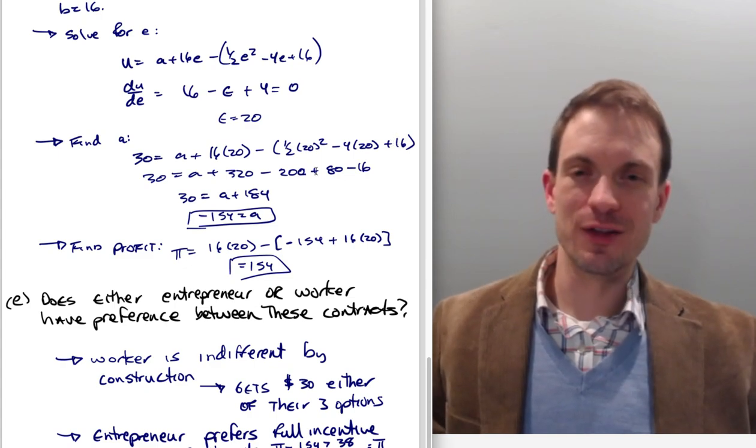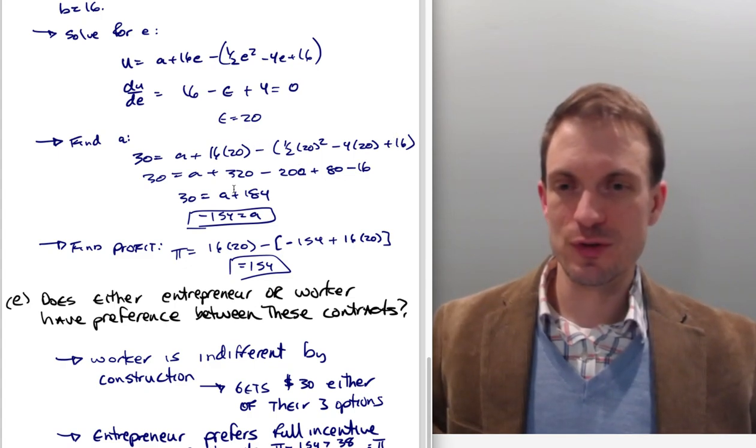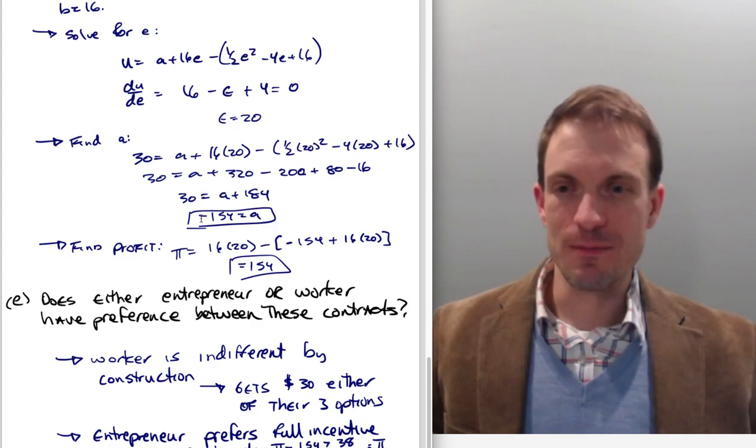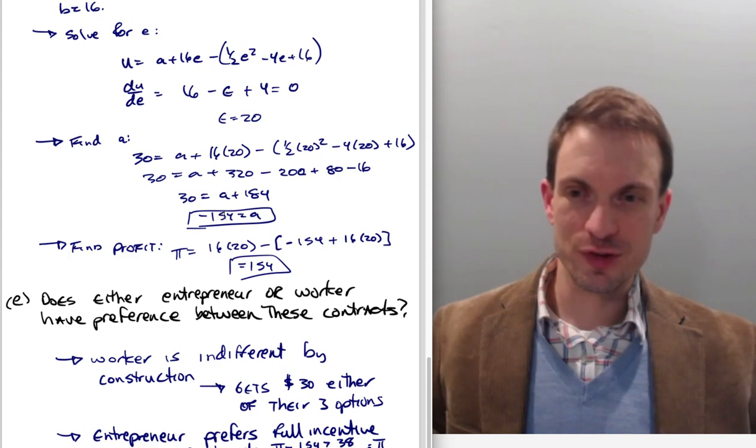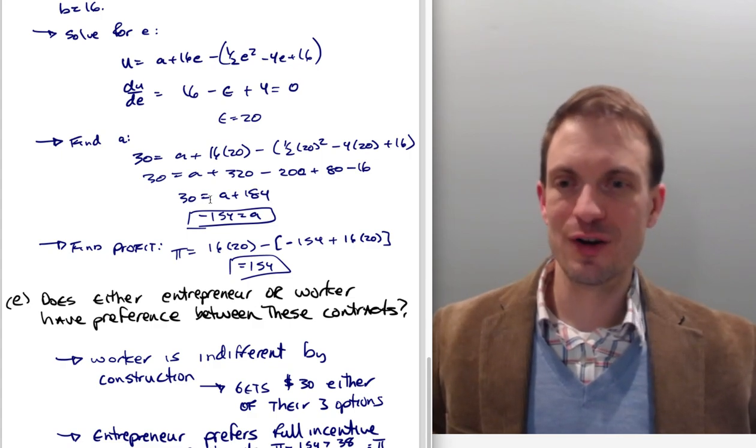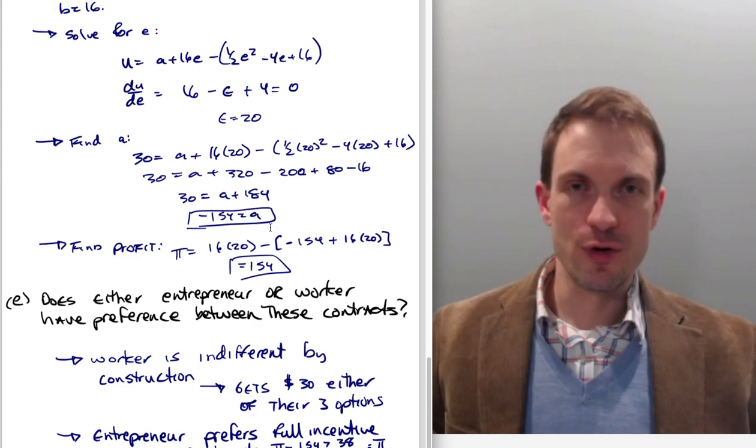And then here we have minus 16. Why? Because this minus sign comes through. And we'll find that A will end up having to be minus 154. So I should move this line a little bit. The A has to be minus 154. You can see that, obviously, because we move this 184 to the other side. There's 30 sitting there, so A is negative 154.